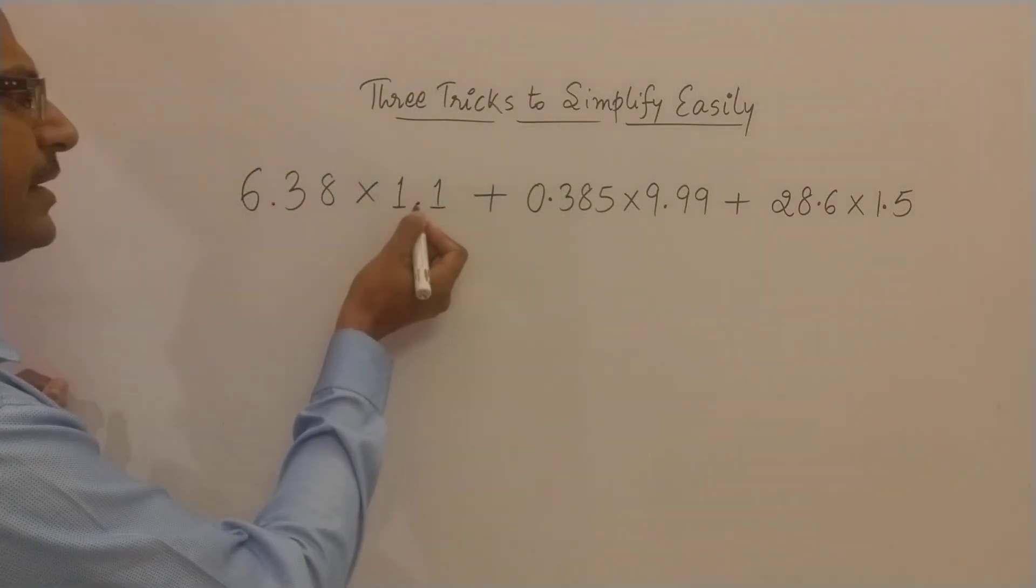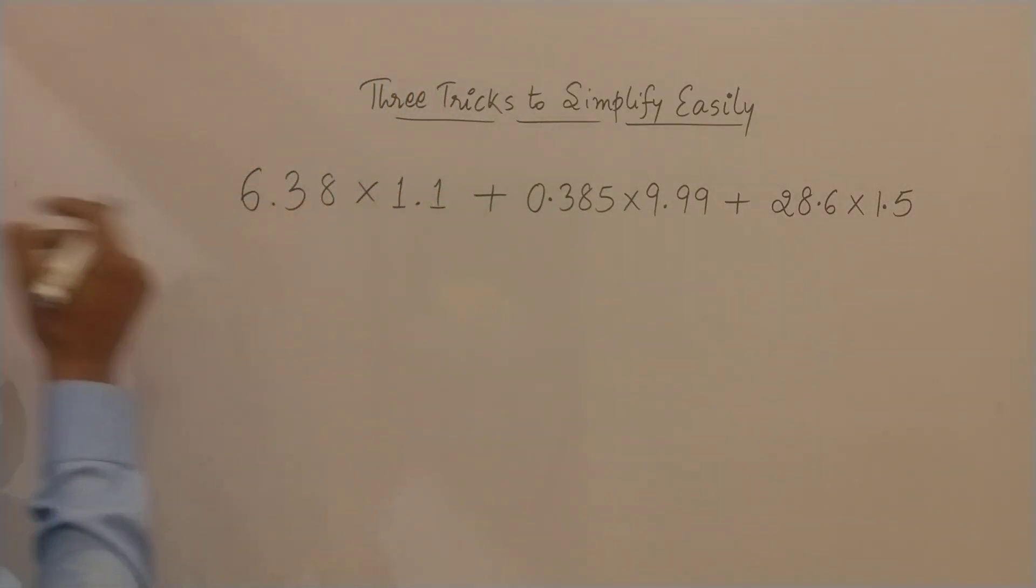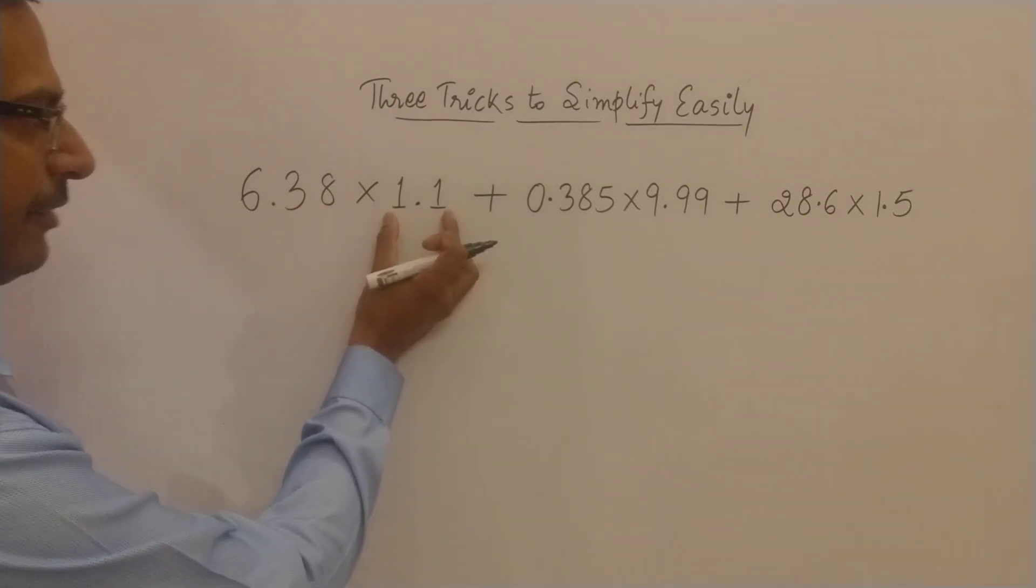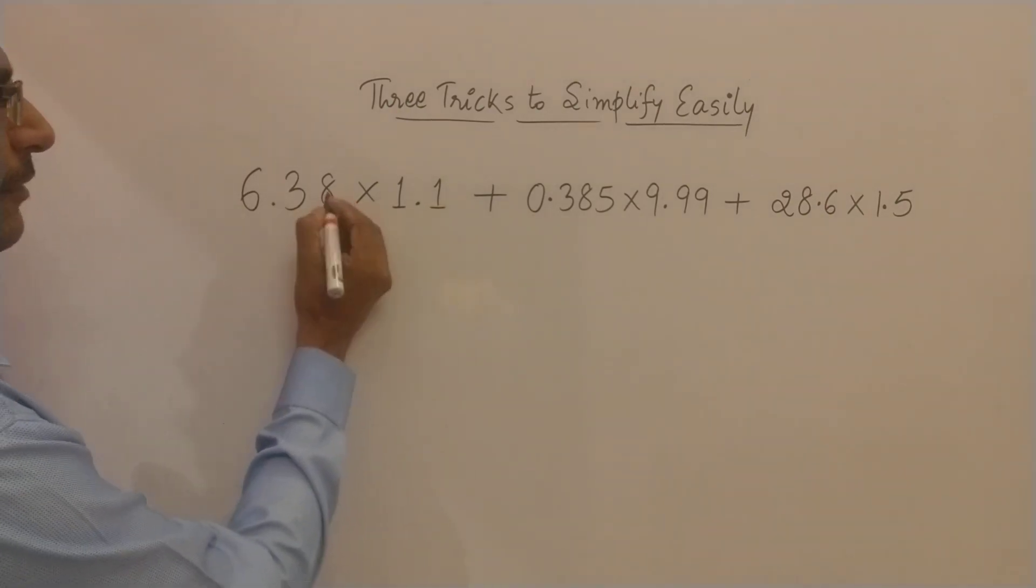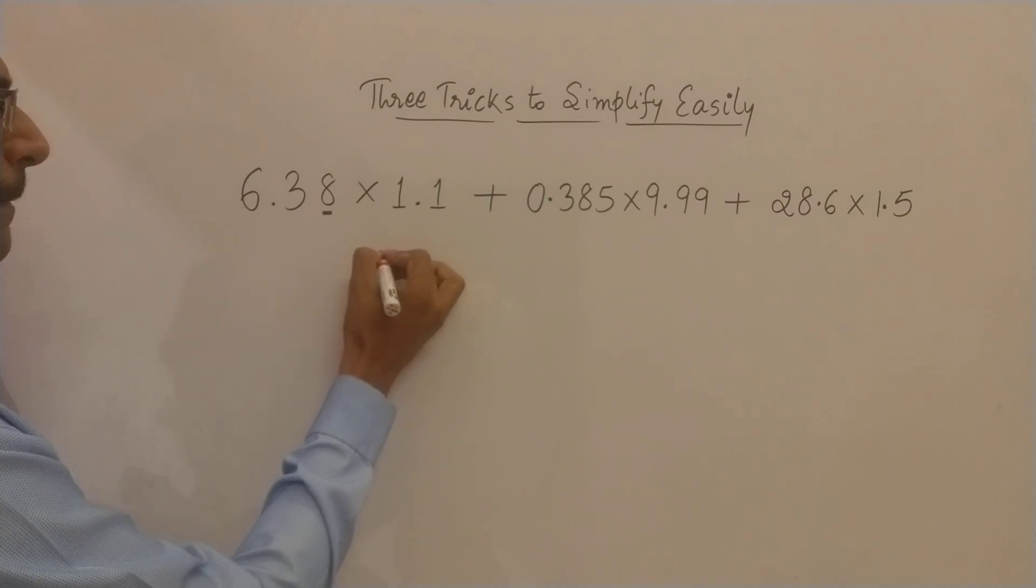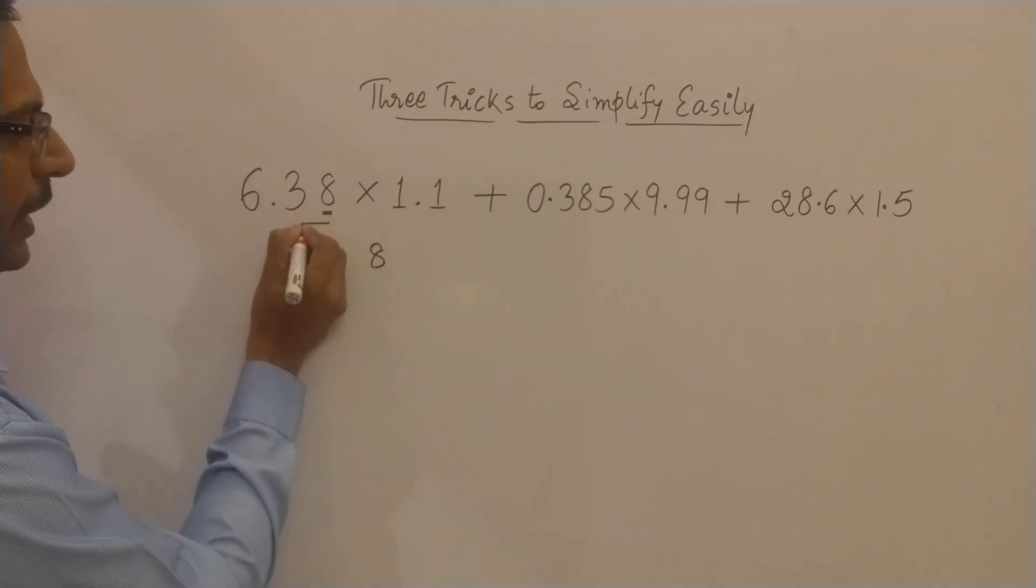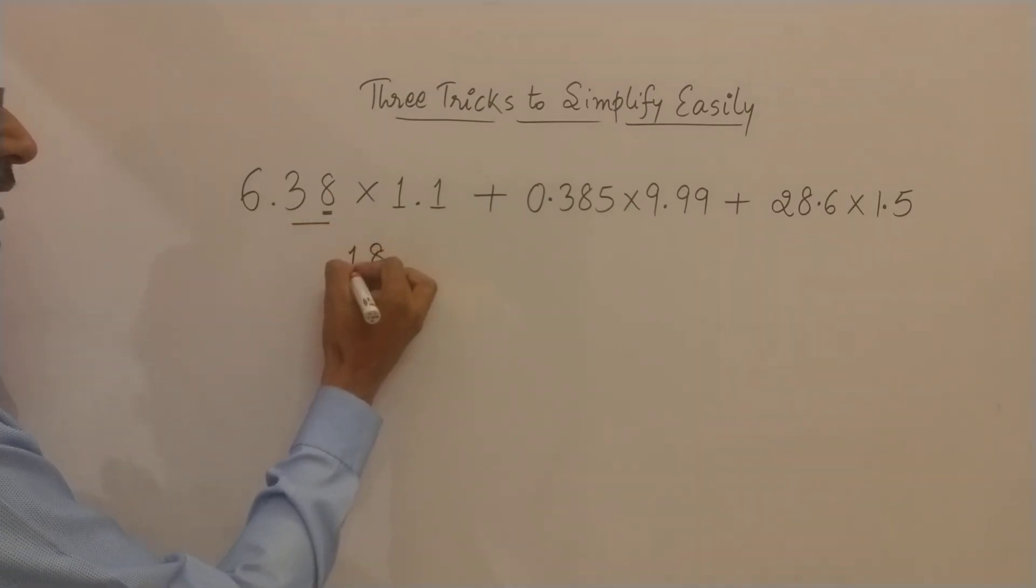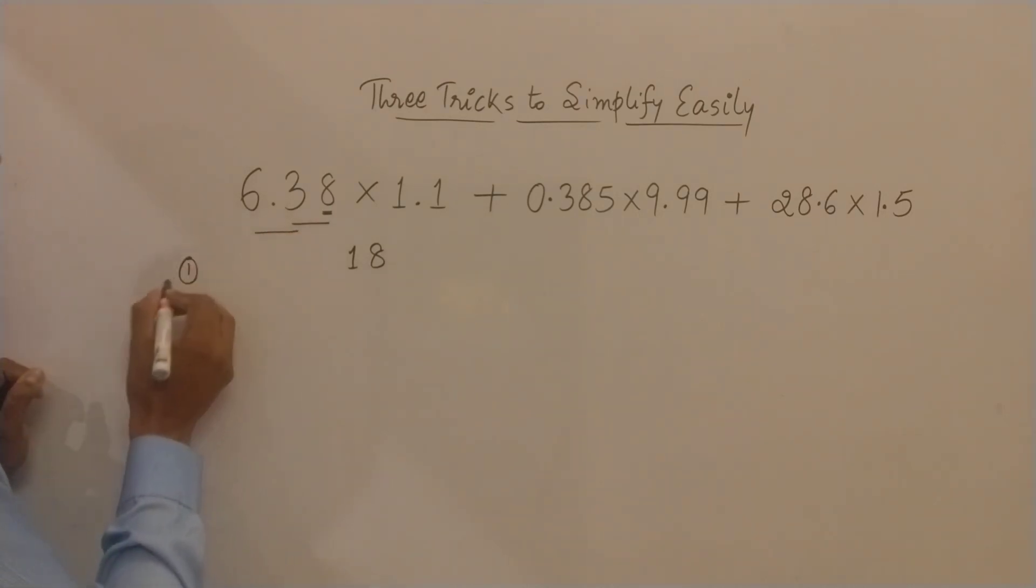See, if I don't consider the decimals first, this is a problem of multiplication by 11. So how do you multiply by 11? See, 8, 8 plus 3, 11, so 1 and remember the 1 carry, 3 plus 6, 9, 9 plus 1, 10, 0 and 1 carry, and finally we have this 6, 6 plus 1, 7.